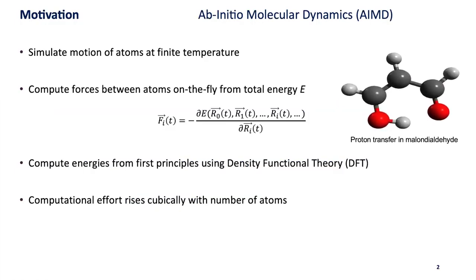What we are doing with CP2K is so-called ab initio molecular dynamics. We simulate the motion of atoms at a finite temperature but instead of relying on models for the forces, we actually compute the forces as the gradient of the total energy of the system. These energies we can compute from first principles using electronic structure methods, in particular density functional theory or DFT.